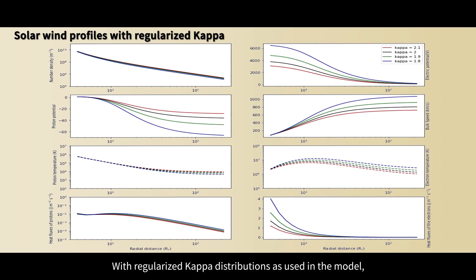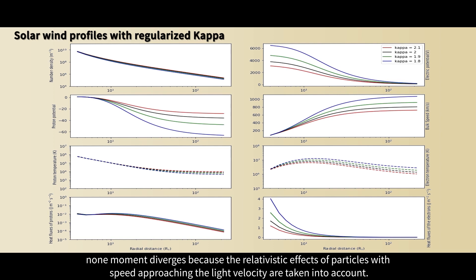With regularized kappa distributions as used in the model, none moment diverges because the relativistic effects of particles with speed approaching the light velocity are taken into account.